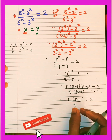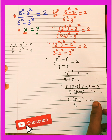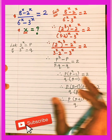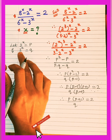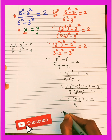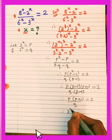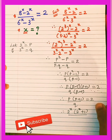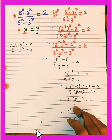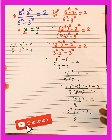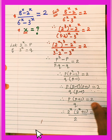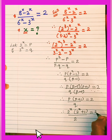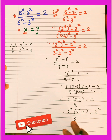After cancellation we are left with p(p + 1) / q = 2. Now substituting back: p = 2^x and q = 3^x. So we get 2^x × (2^x + 1) / 3^x = 2. Shifting the 2 to the other side and q as well, we get 2^x × (2^x + 1) = 2 × 3^x.